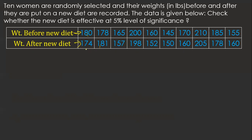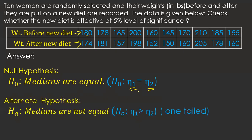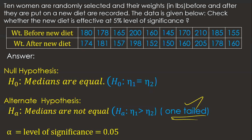Before solving, I'll write the hypothesis. The null hypothesis is that the medians are equal. The alternative hypothesis is that the median before the diet is greater than the median after the diet, because we want to find out whether the new diet is effective — that is, whether weight before is more than weight after. So this is a one-tailed test. Alpha is 0.05, given as 5% level of significance.